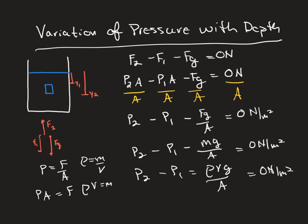So now if we look here, we have volume divided by area. So we have three dimensions divided by two dimensions, which gives us one dimension, which over here would just be the height of this parcel of fluid. So we're going to do p2 minus p1 minus rho g times y2 minus y1 equals 0 newtons per meter squared.